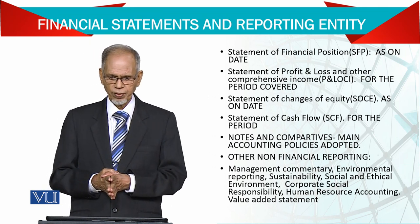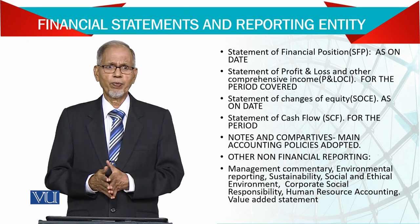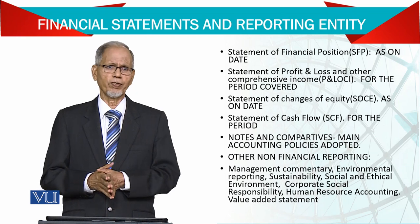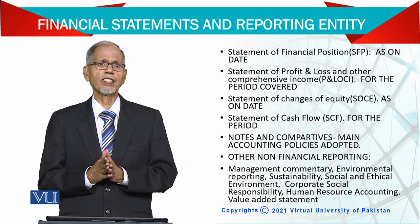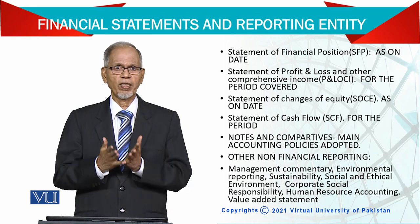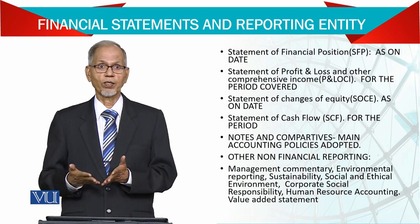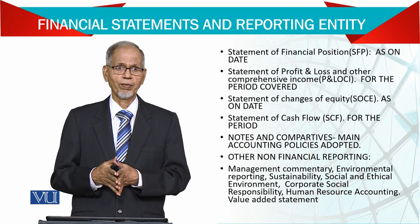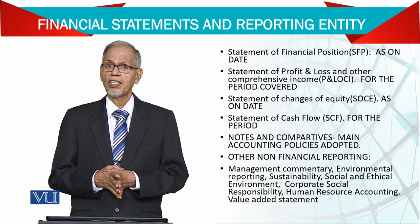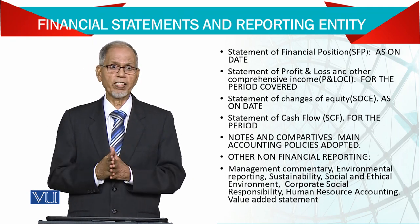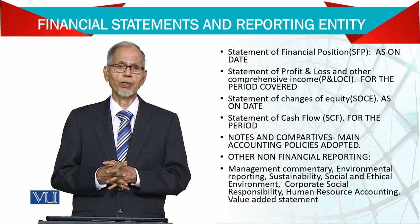Then the statement of cash flow for the period — this is a very important statement. People say quality of income rather than quantity of income. Quantity of income means your profit is increasing, but the cash flow statement shows the quality — whether, as your business is increasing, your cash is also increasing. Cash is known as oxygen for a business. So if your company is doing good business and making profits, but you are not collecting cash in time, then you have a problem. This statement is now more important compared to the other statements.